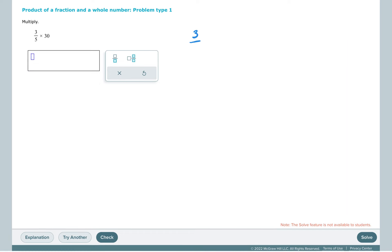So in this problem, we have 3 fifths times 30. We can change that to 30 over 1. We can then multiply the numerators and the denominators. We can see if there's any way we can simplify, and there is, because 5 goes into 5 once, and 5 goes into 30 six times. Multiply across the top, 18, across the bottom, and we have an answer of 18.